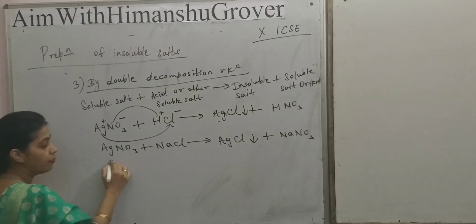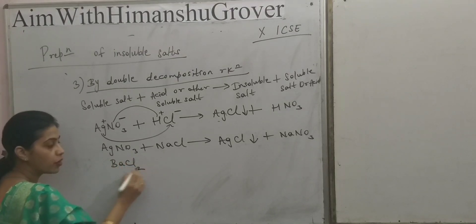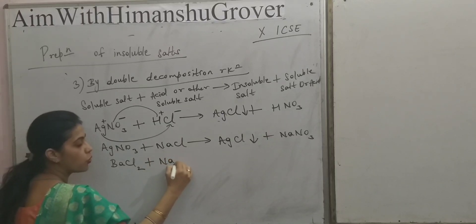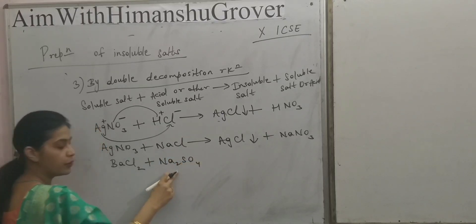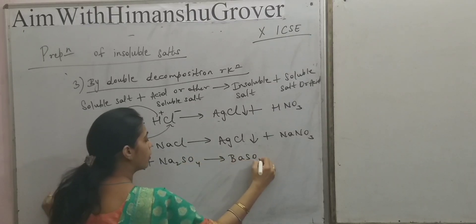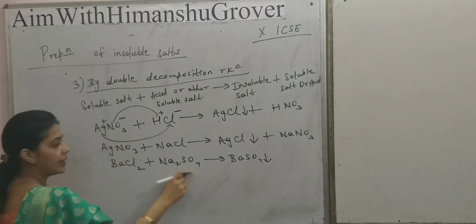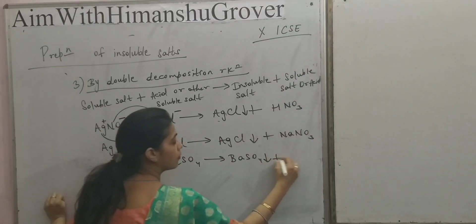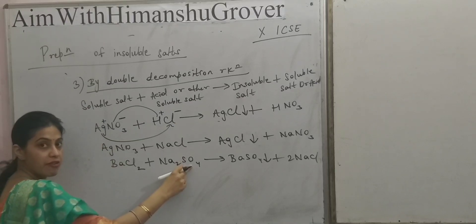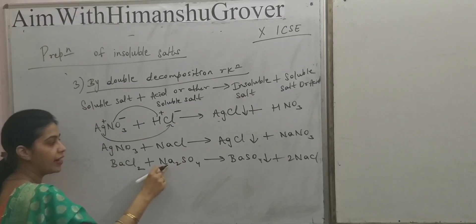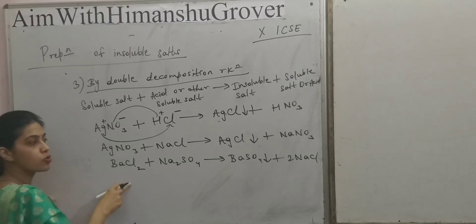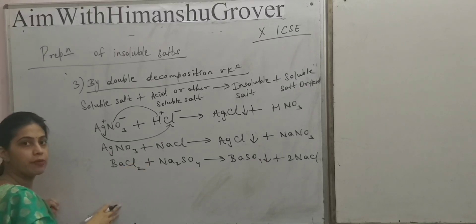Similarly, if we take BaCl2, when it is reacted with sodium sulphate, Na2SO4, it forms BaSO4, which is a precipitate, plus NaCl. Barium combines with the sulphate radical, a negative ion, and sodium combines with the chloride ion, a negative ion. Positive goes to the negative ion and forms sodium chloride.